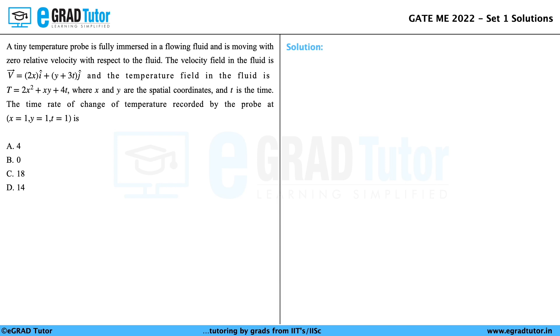We are given with four options. Let's look at the solution. We are given with the velocity field of the fluid which is vector v equals 2x i hat plus (y plus 3t) j hat. From this velocity vector field, let us consider the component u as 2x and the component v as y plus 3t.